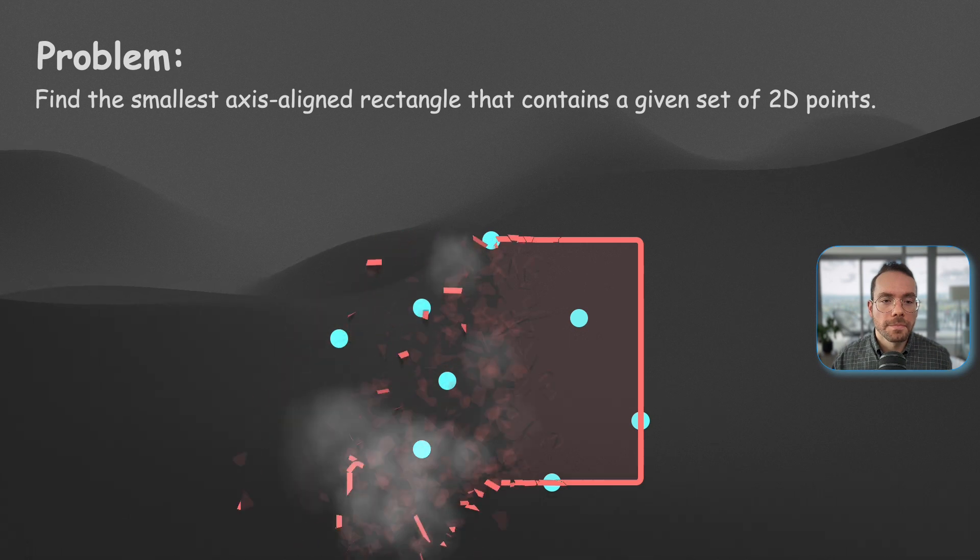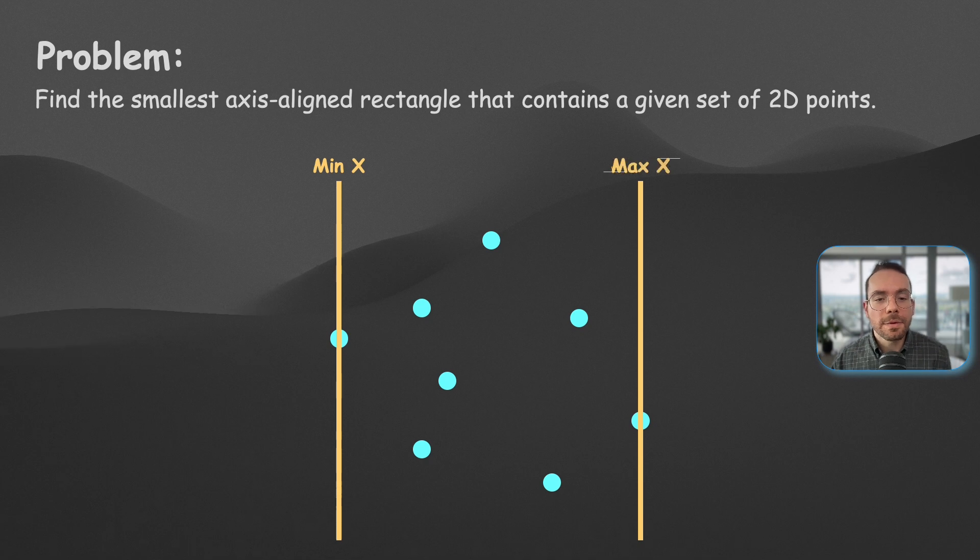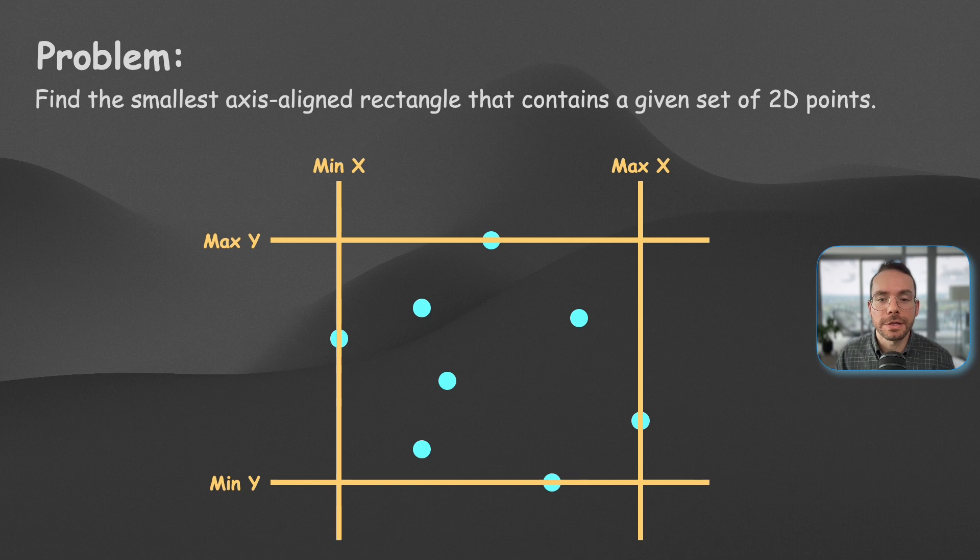And now, let's say the minimum X coordinate, the maximum X coordinate, the minimum Y coordinate, and the maximum Y coordinate. Once we have all these four values, we can easily calculate the area of the smallest rectangle.